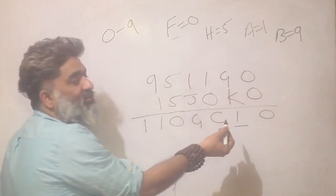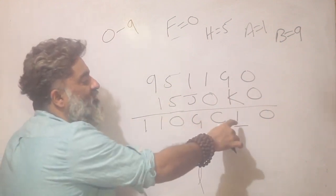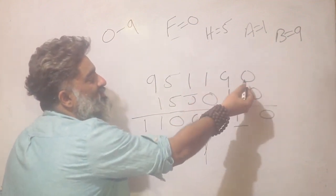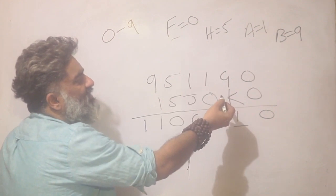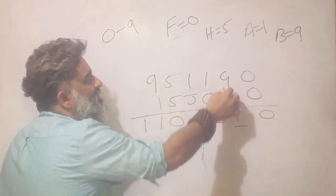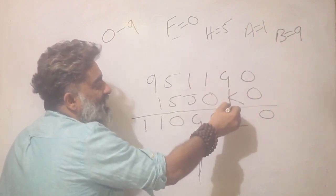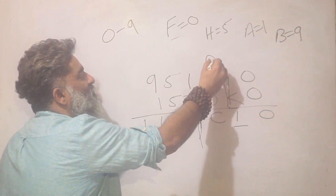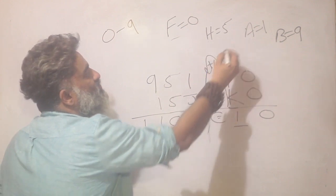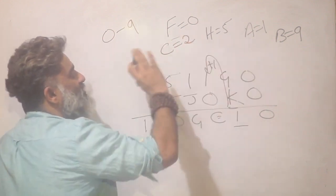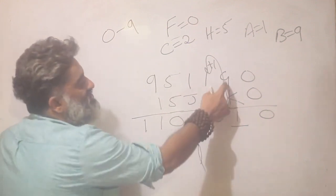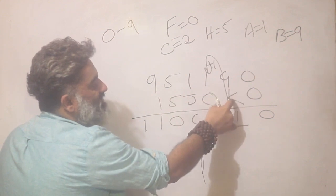A sum giving a last digit of 1 could be 1 itself, but 0+1 or 1+0 is ruled out — F is already 0, and A is already 1, so G and K can't be 0 or 1 respectively. Therefore the sum must be 11, meaning there's a carry-over of +1 from this column. Then 1 (carry) + 1 + 0 means C has to be 2. Definitively, C=2.